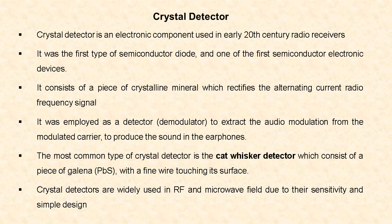The most common type of crystal detector is the cat whisker detector, which consists of a piece of galena — that is lead sulfide — and a fine wire touching its surface. Crystal detectors are widely used in radio frequency and microwave fields due to their sensitivity and simple design.